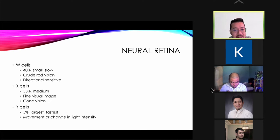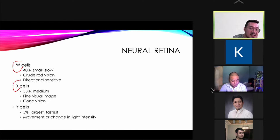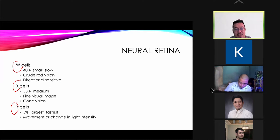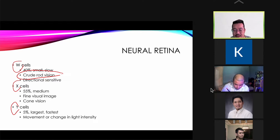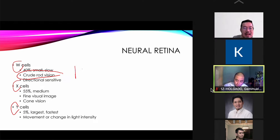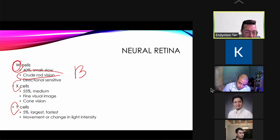There are three types of ganglion cells: W, X, and Y. W cells make up 40% of ganglion cells and are responsible for crude rod vision — black and white. X cells are the most numerous at 55% and are responsible for fine visual image and cone vision — color. Y cells are the largest and fastest.